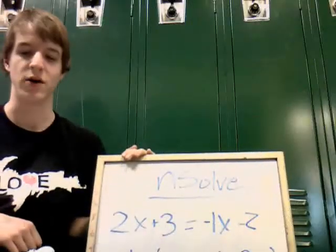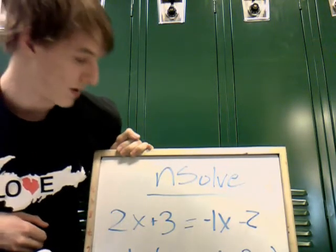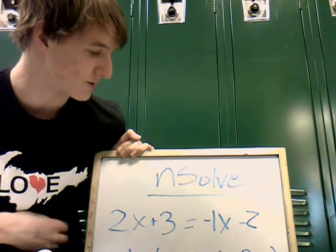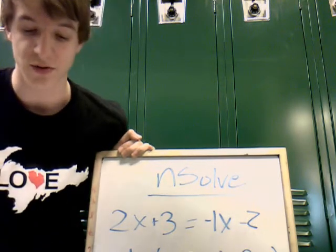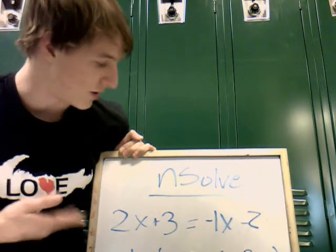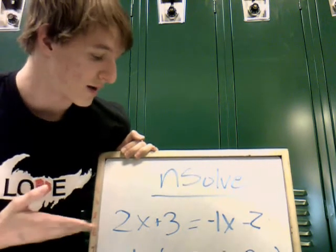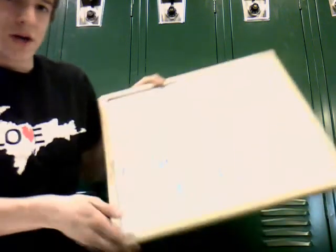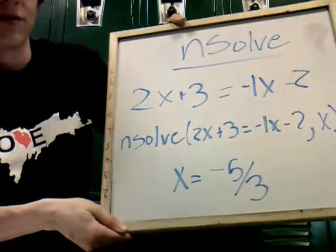Now we're going to show you how to use nSolve on your nSpire calculator. For the equation 2x plus 3 equals negative 1x minus 2, simply type this equation into the nSolve setting in parenthesis, then comma, x. Hit enter and it will solve for x, which equals negative 5 over 3.